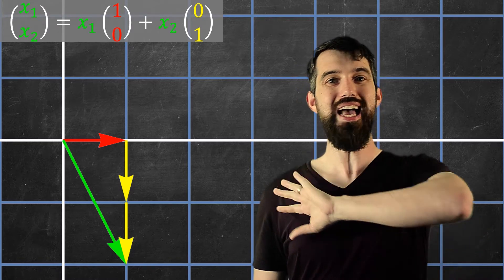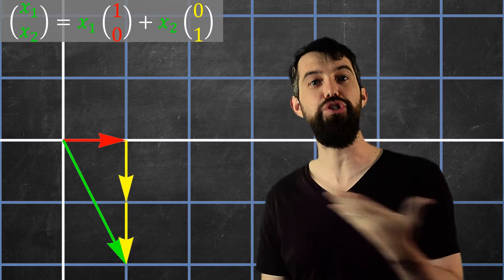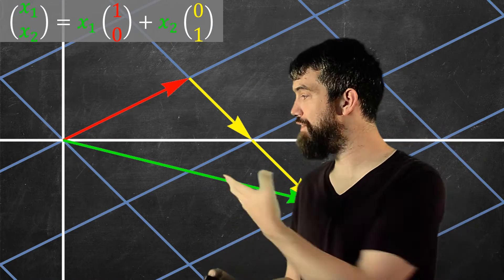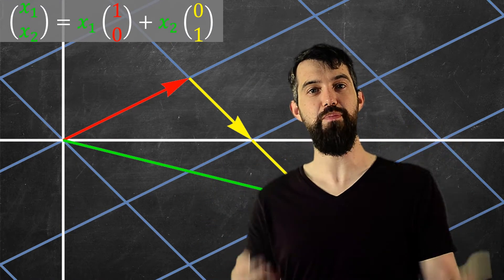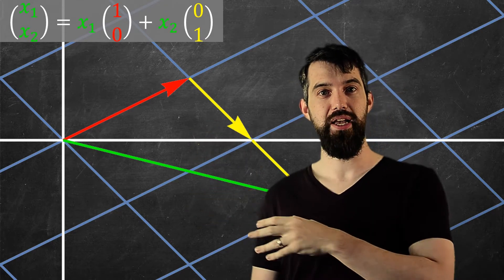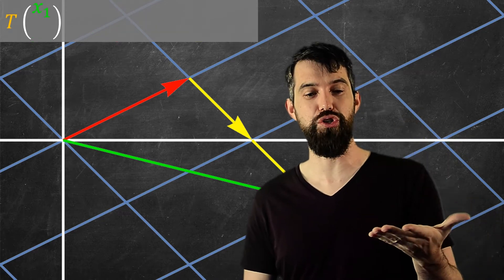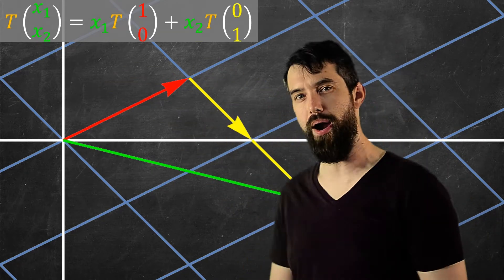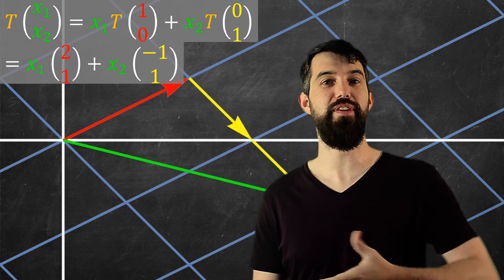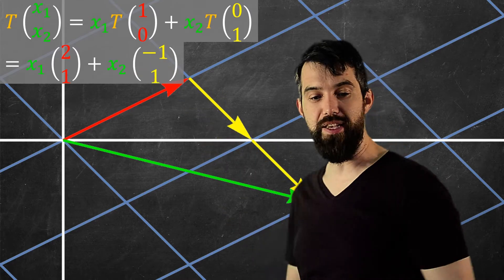That's the big picture, but let's now track what's going on algebraically as we tell this geometric story. Having begun with the vectors written as a linear combination of the standard basis vectors, when I apply the first transformation, what effectively is happening is that this linear combination has some transformation — I put a T everywhere. The T takes the first standard basis vector to 2, 1, and the second standard basis vector to minus 1, 1. So I can represent it in this way.